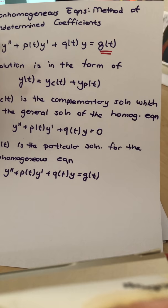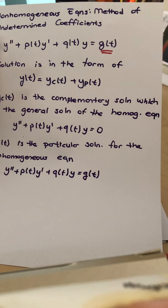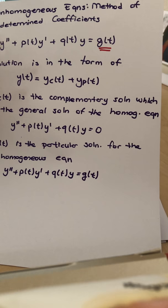yc(t) is the complementary solution. This is the solution you already know—if the equation is given with constant coefficients, first we need to solve it as if the right-hand side is zero.